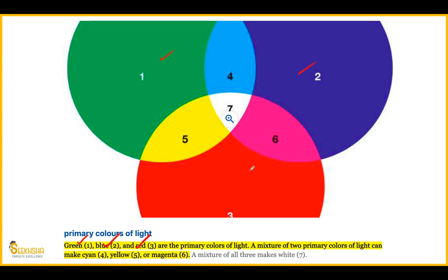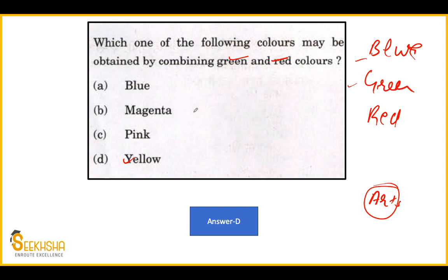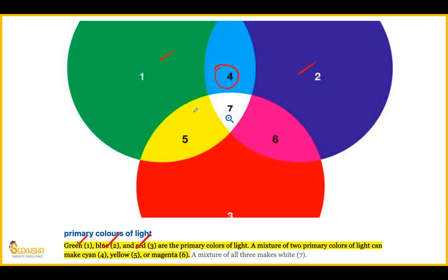Green, blue and red are your primary colors. Now, if you mix these two colors, they form different colors. For example, if you mix green and blue, it will form cyan color. Similarly, if you mix green and red, it will form yellow. Your option was green and red — that's why the answer is yellow.